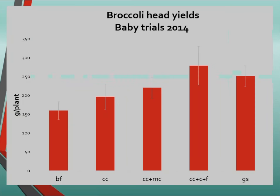Lettuce yields across all three years showed no treatment effects, which is not entirely unexpected given the fertile site and lettuce being a short-season crop. Average broccoli head yields in 2014 — year three — across baby trials showed a nice progression: bare fallow had the lowest yields, followed by cover crop alone, then cover crop with mustard cake, and then cover crop with compost and fertilizer and grower standards had the highest yields.